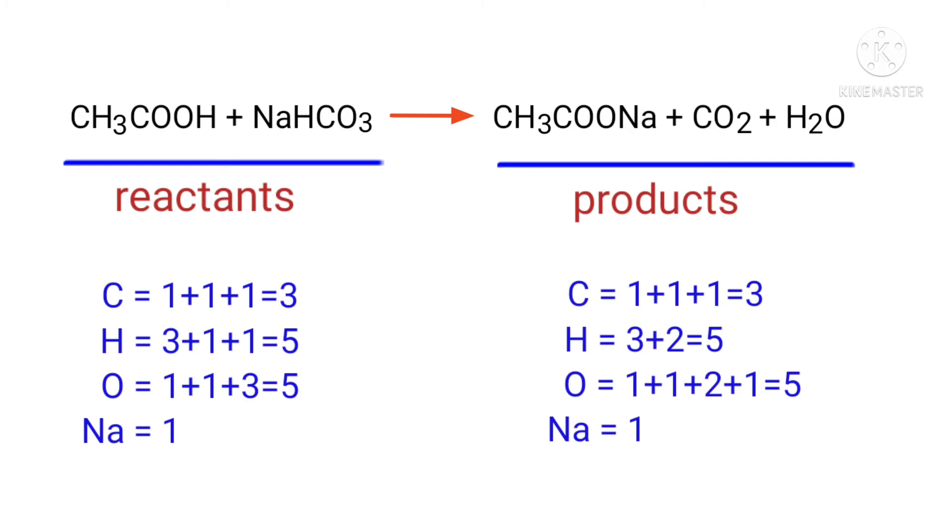If you look at this equation, the number of atoms on the reactant's side are the same as the number of atoms on the product's side. There are 3 carbon atoms, 5 hydrogen atoms, 5 oxygen atoms, and 1 sodium atom on both sides.